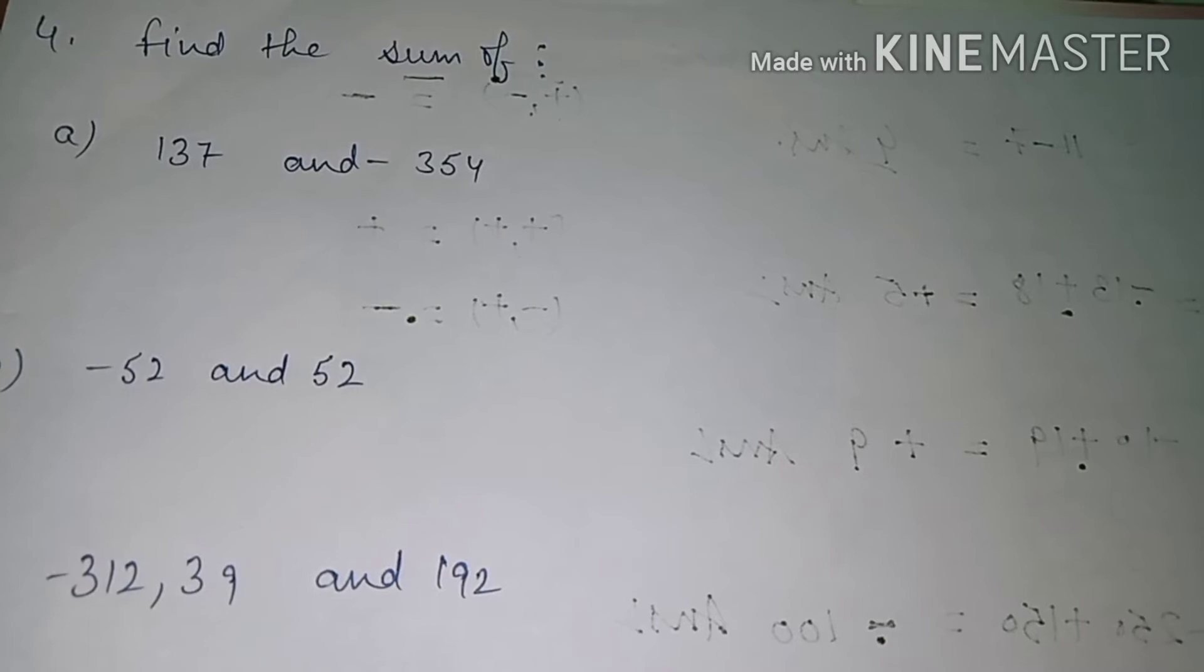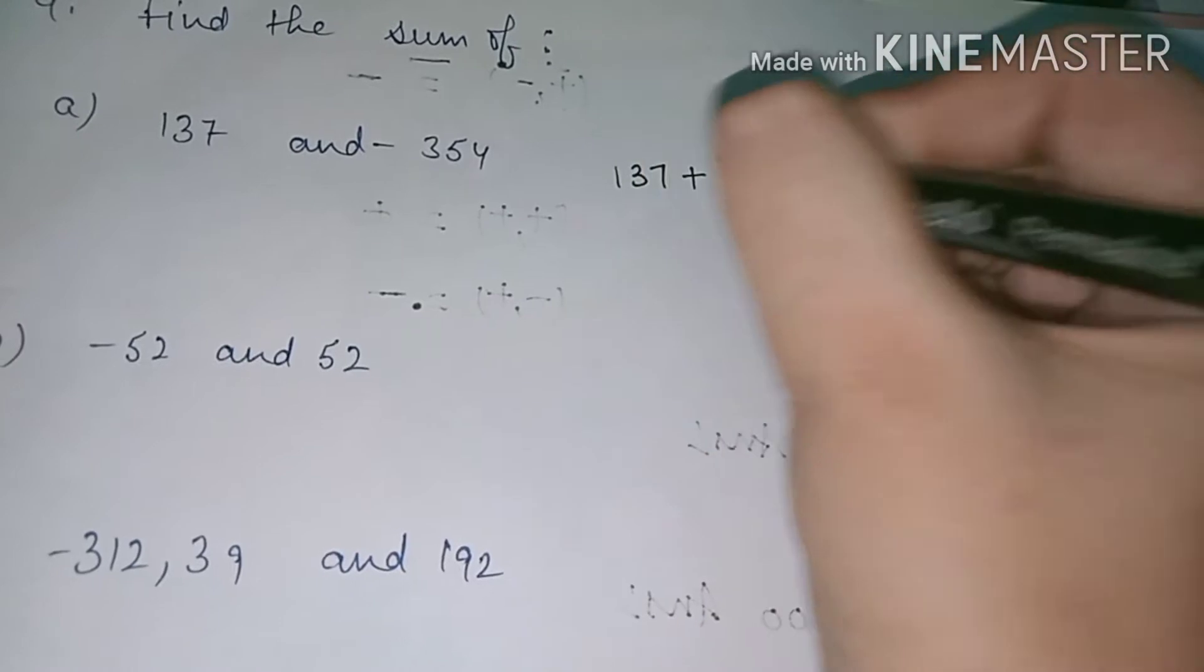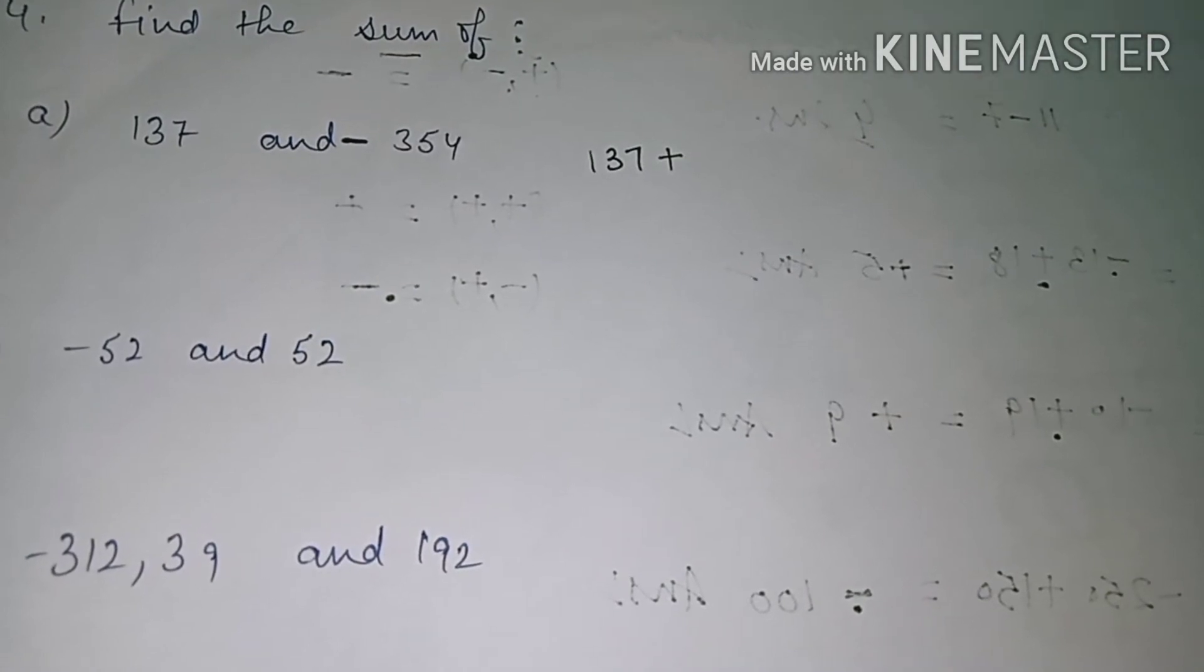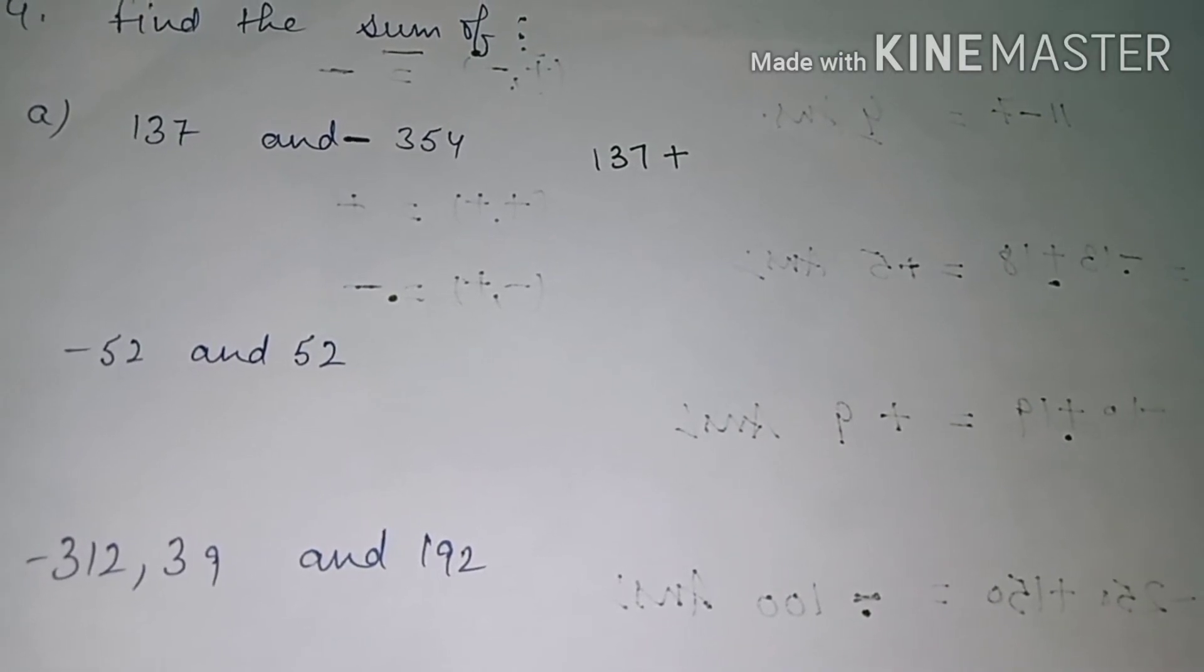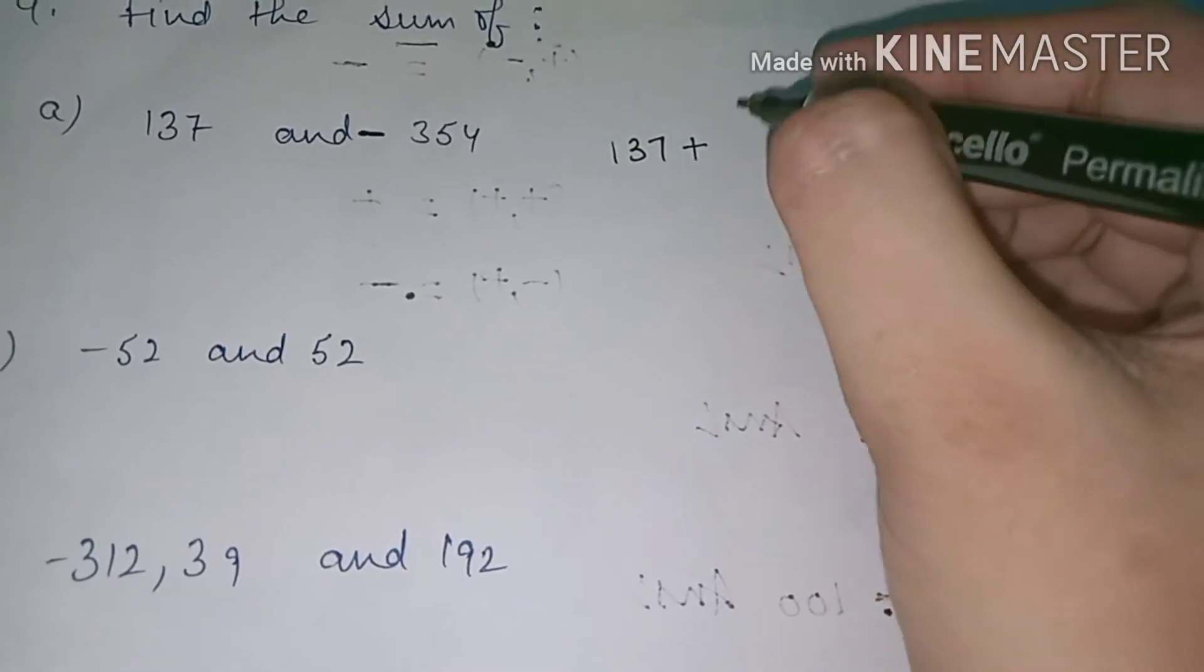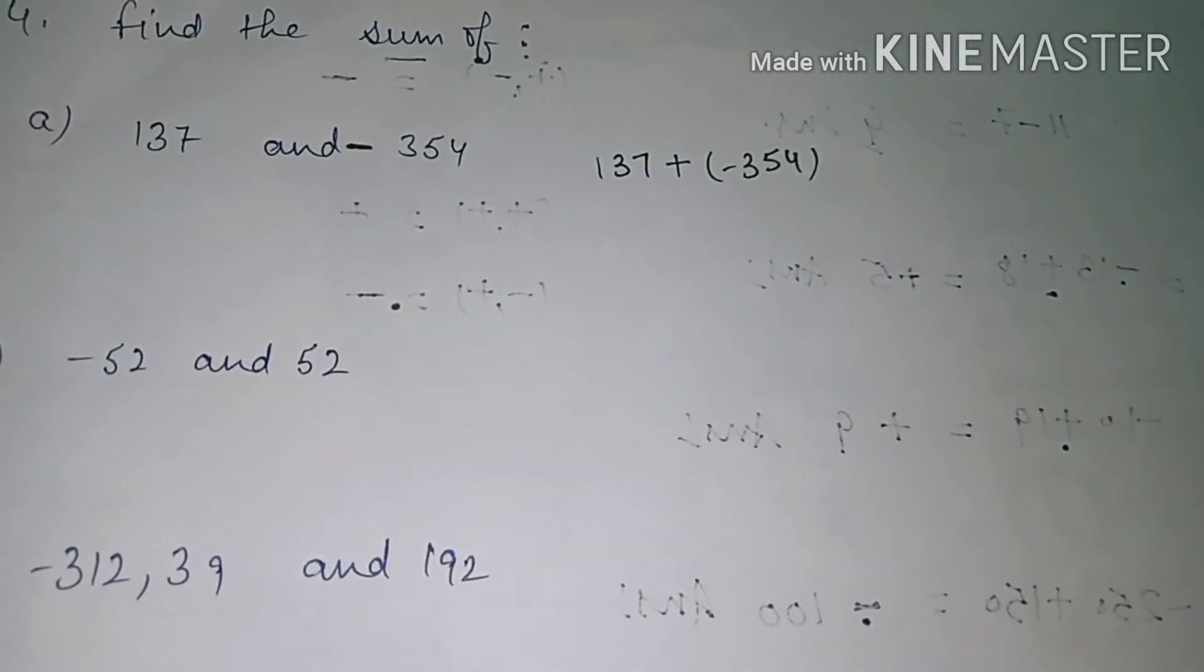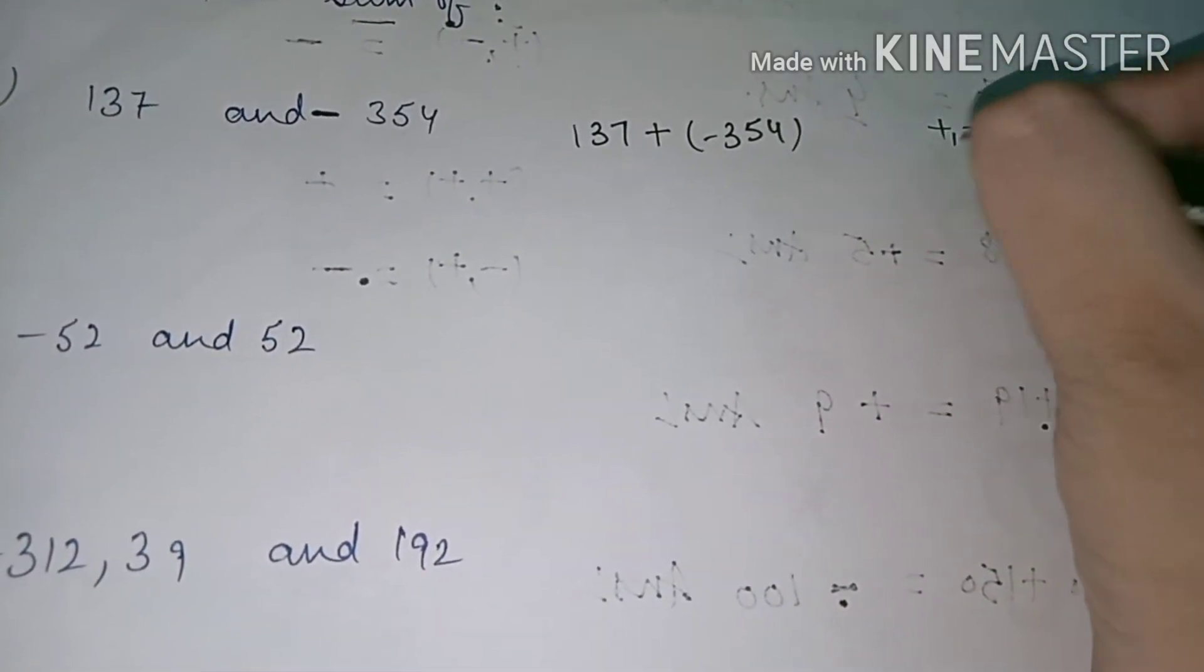137 and minus 354. What do we need to do? Add. What sign will be added? But when we read any number, if the number is minus, it means to read minus. Minus 354. What do we need to add? 137 and minus 354. Add. Minus 137 plus.